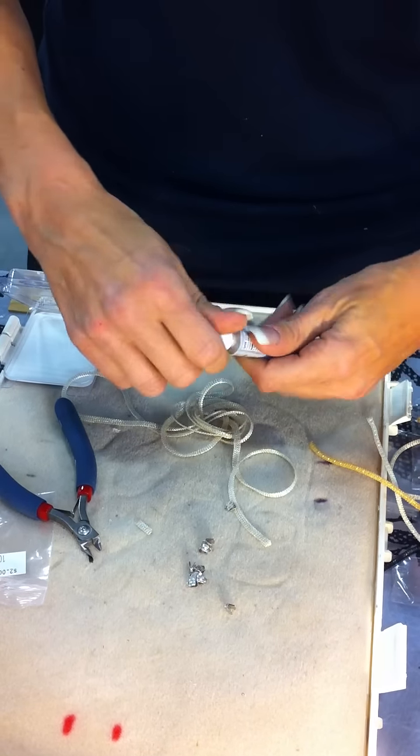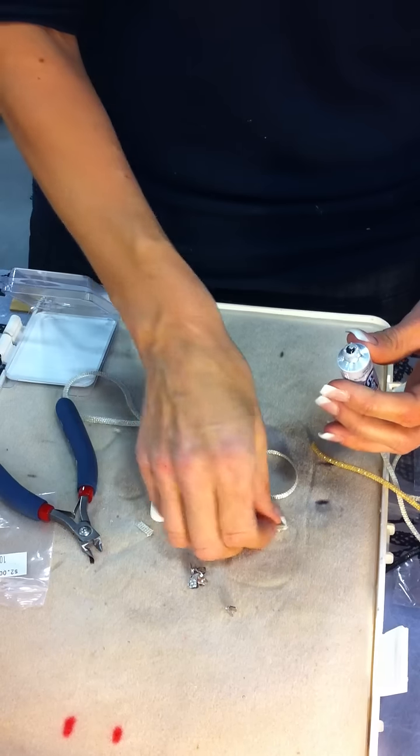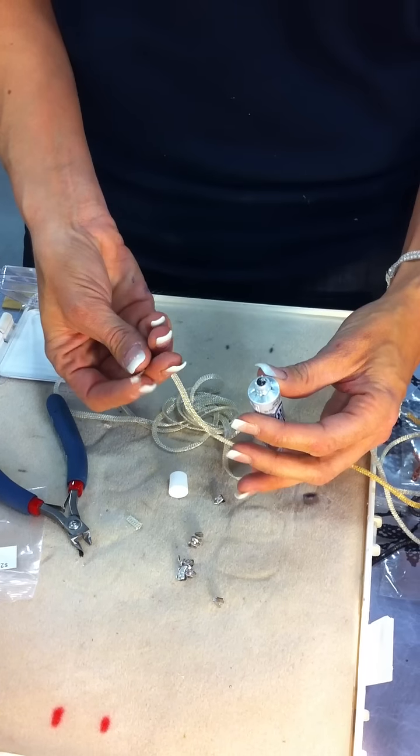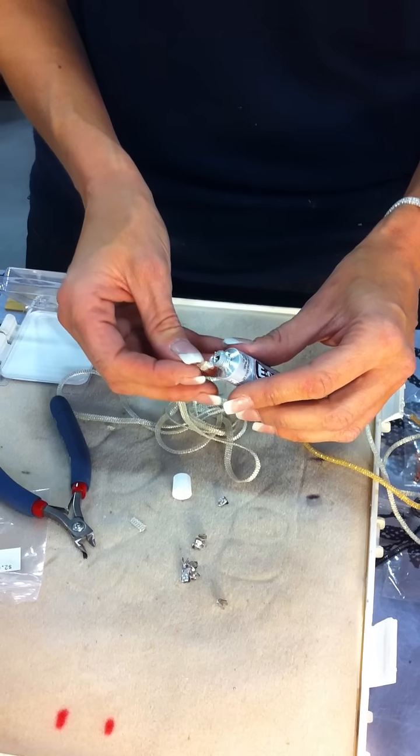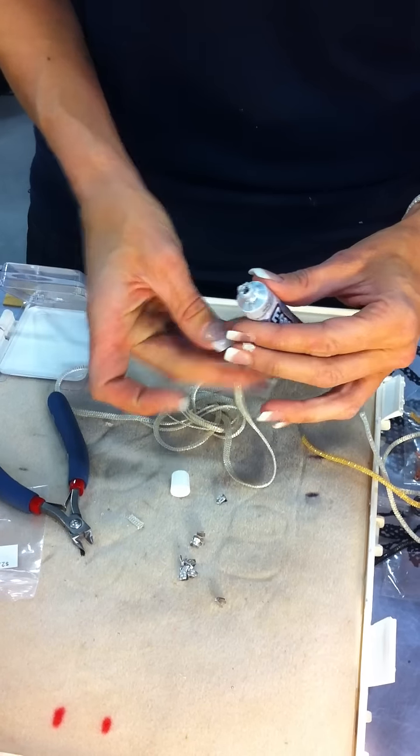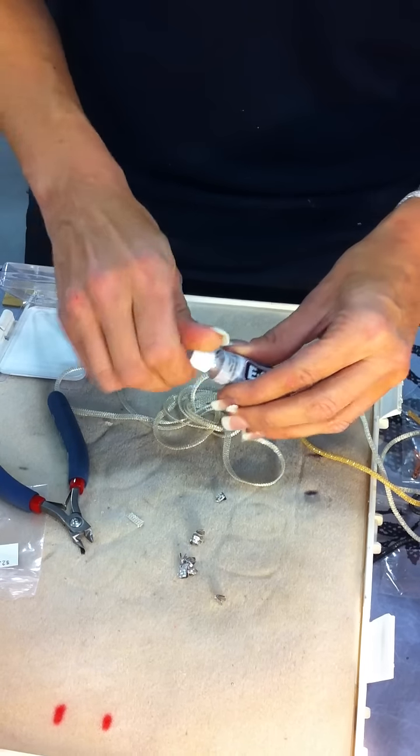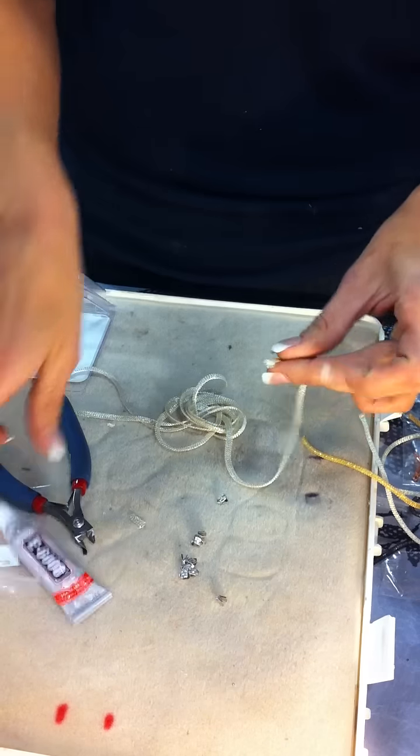What we're going to do is take a little bit of the E6000. This always helps if you have a toothpick or something on hand, but we're going to go a little messy here and just stick it on in there. Way more than we need because I don't have the proper tools here.